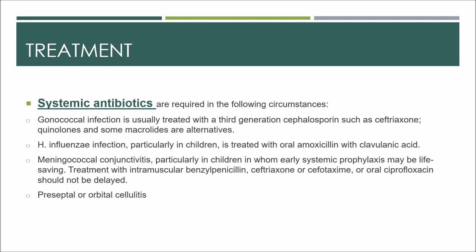Haemophilus influenzae infection, particularly in children, is treated with oral amoxicillin-clavulanate; there is a 25 percent risk of developing otitis and other systemic problems. Meningococcal conjunctivitis, particularly in children, warrants early systemic prophylaxis, which may be life-saving, as up to 30 percent may develop systemic disease without treatment. The advice of pediatric and infectious disease specialists must be sought, but if in doubt, treatment with intramuscular benzyl penicillin, ceftriaxone, or cefotaxime, or oral ciprofloxacin should not be delayed.